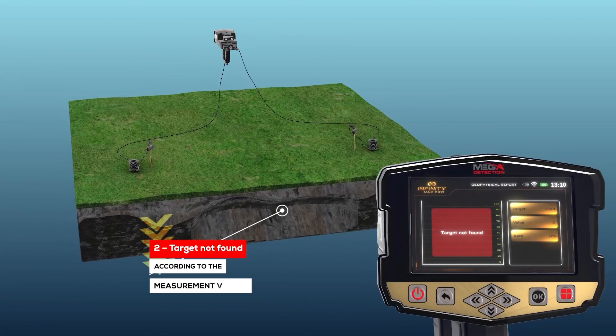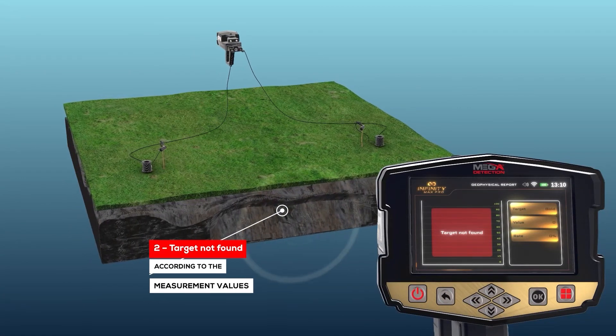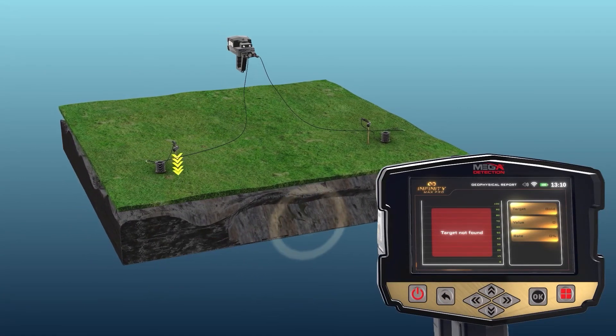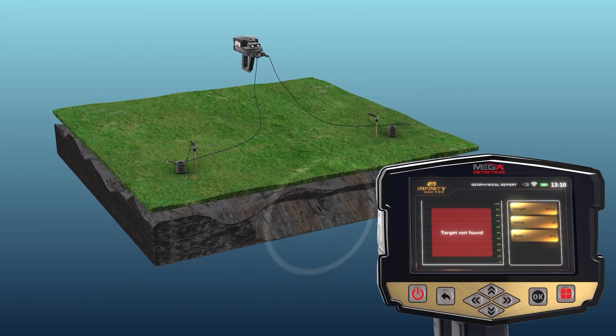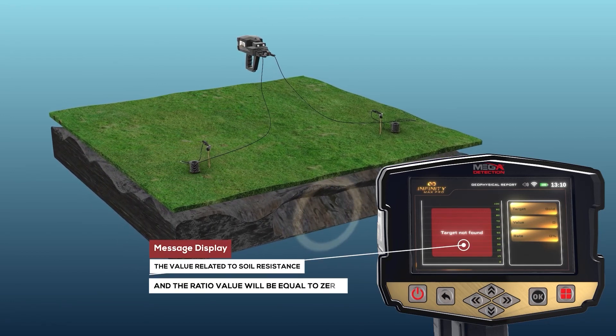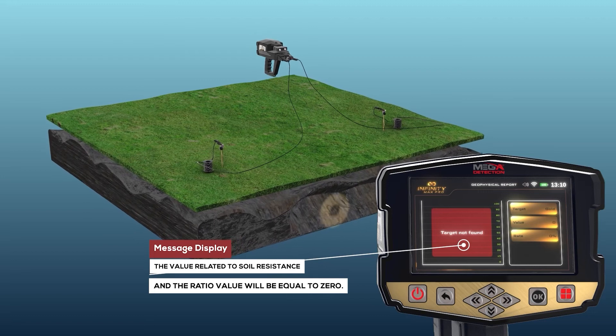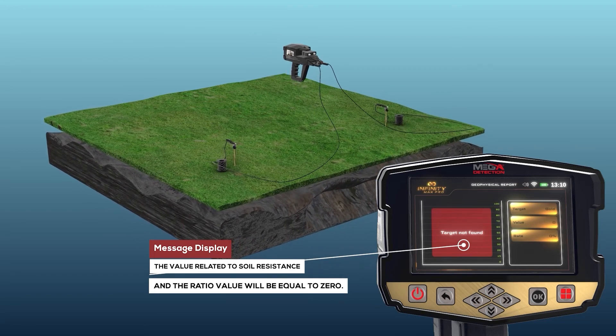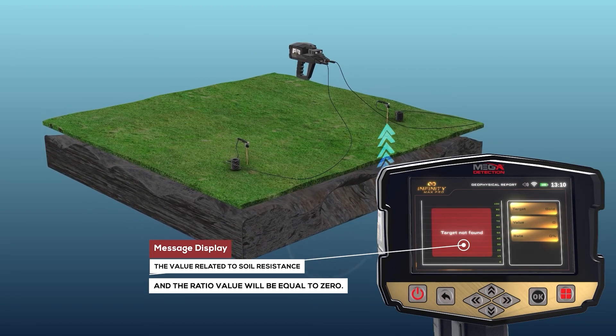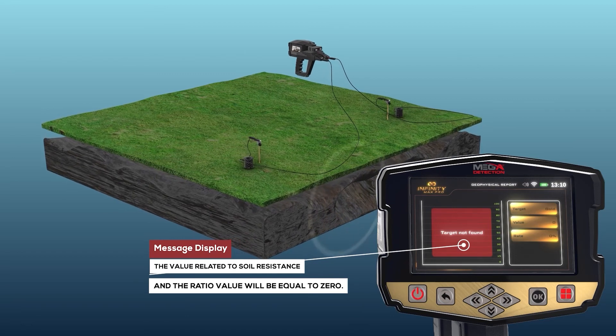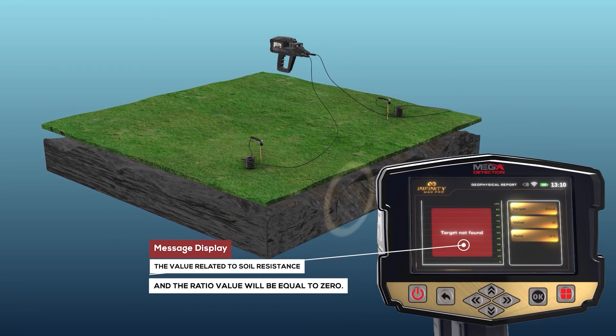2. Target not found. Here the curves, or ellipses mentioned before, will not be drawn, and instead a message will be displayed indicating that the target was not found. In this case, the value related to soil resistance and the ratio value will be equal to zero.